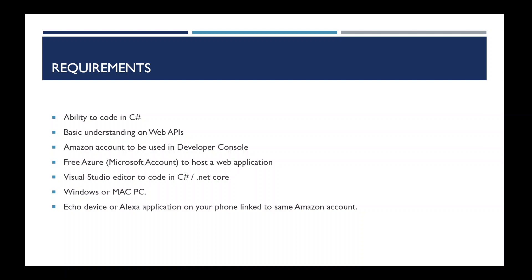Since we're coding in C# and .NET Core, you'll need Visual Studio. If you don't have it or don't know how to set it up, refer to chapter one of my C# tutorial series where I show step-by-step how to install it. You'll need a Windows or Mac PC for coding. An echo device is recommended but not required — you can access the skill through the Alexa app on your phone or any smart device. That was the introduction; in the next video we'll actually start developing the skill on Amazon's Developer Console.